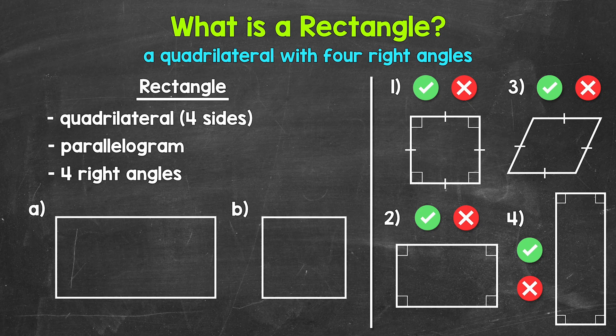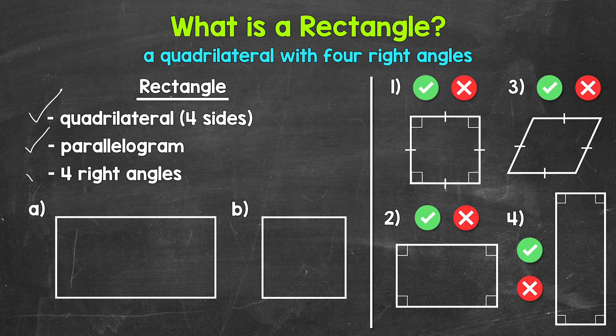Rectangles are quadrilaterals — they have four sides. More specifically, rectangles are parallelograms. They have two pairs of parallel sides. Opposite sides are parallel and the same length. Opposite angles are the same measure as well. And then to take that a step further than just a parallelogram, rectangles have four right angles.